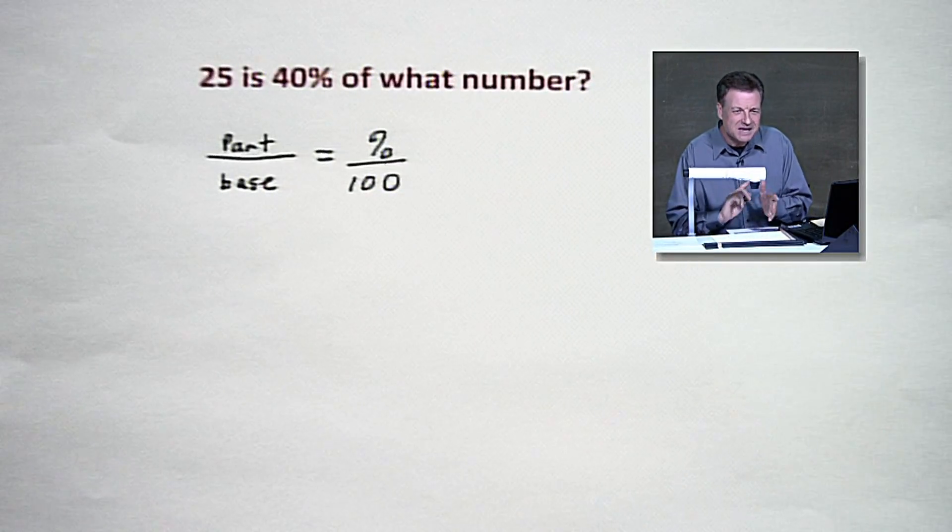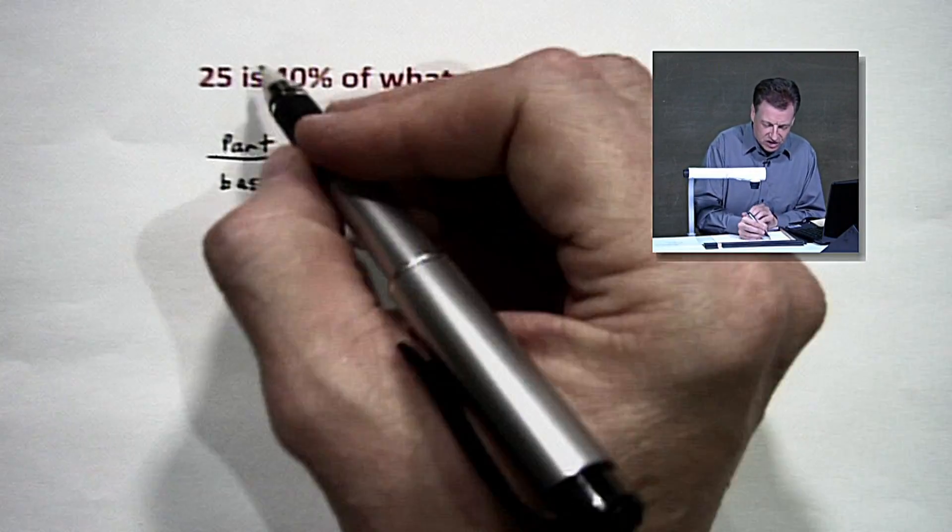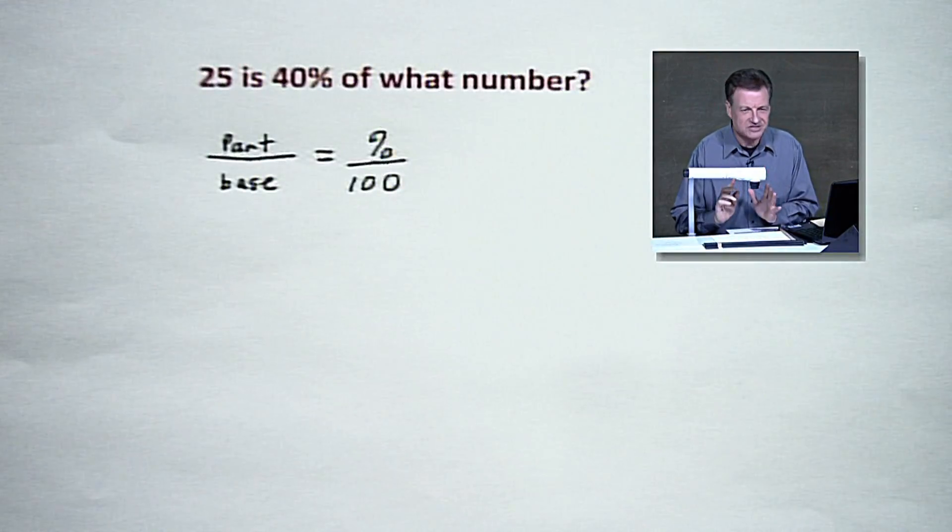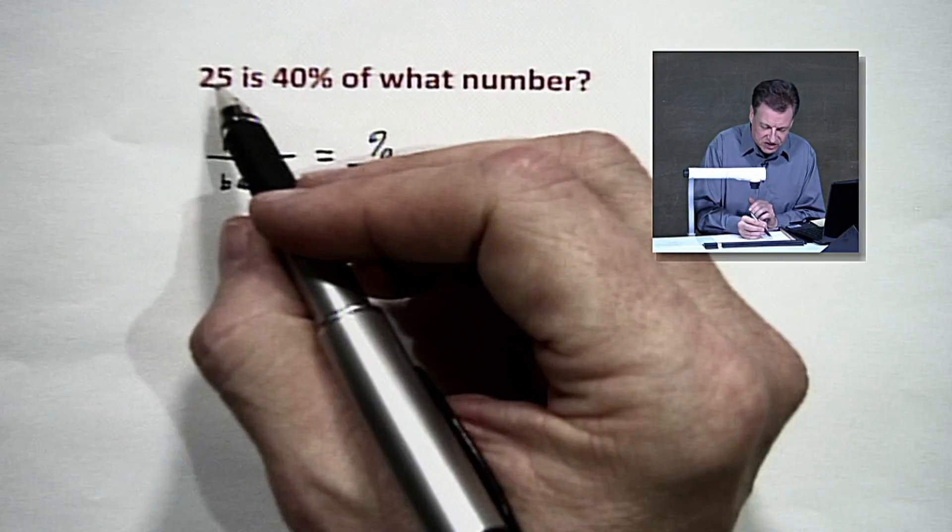Now let's fill in the numbers. We've got some pieces here. Usually the word 'is' indicates that the part is hanging out. It's not always 100% that way, but usually that's where it's going to be. In this case,